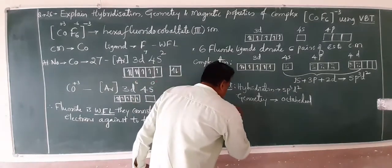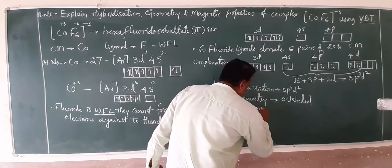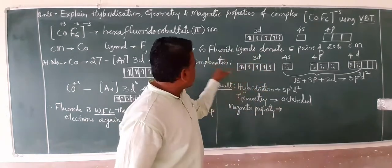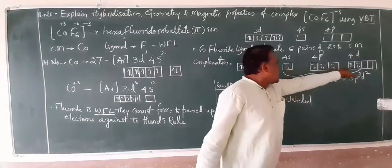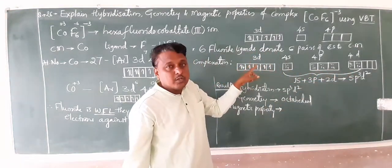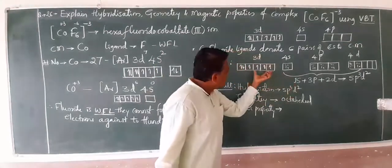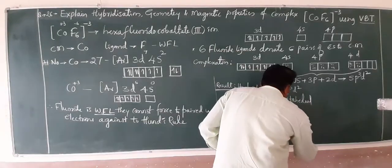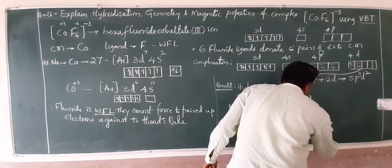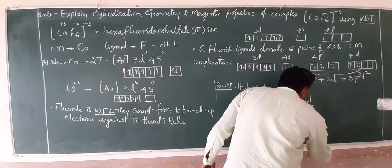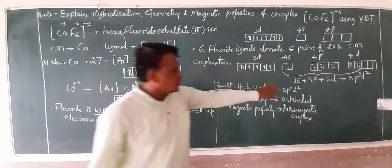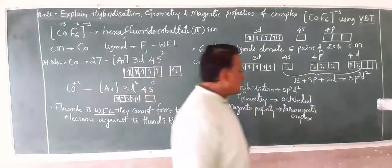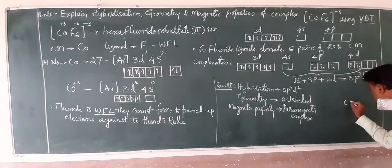Very important: magnetic property. After complexation, if there is an unpaired electron, the molecule or complex is paramagnetic, which is involving four unpaired electrons. So we call it as a paramagnetic complex. Hybridization is sp3d2, geometry is octahedral, magnetic property is paramagnetic.